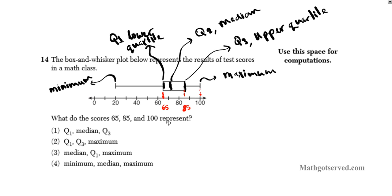But we are asked to focus on 65, 85, and 100. So 65 corresponds to our lower quartile, because this is 65 right here. 85 corresponds to Q3, or our upper quartile. And 100 corresponds to our maximum. So these numbers represent Q1, Q3, and the maximum, option number 2 is our answer.